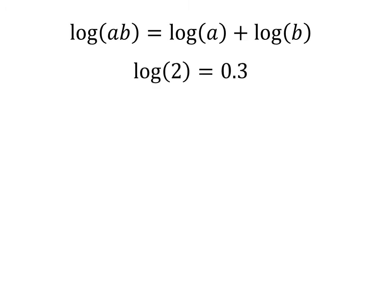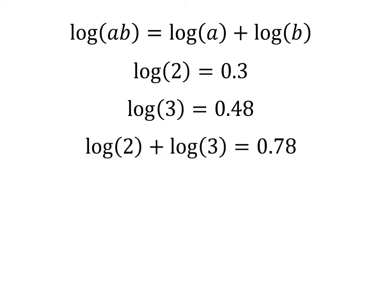For instance, if I want to multiply 2 times 3, I start by taking the logarithm of 2, then I take the logarithm of 3, then I calculate the sum of those two logarithms, then I raise 10 to the power of that sum to arrive at the product: 6.